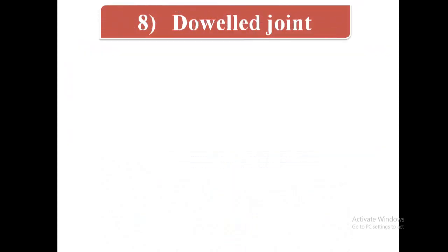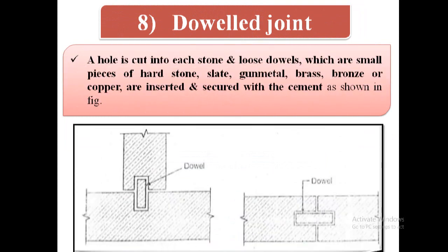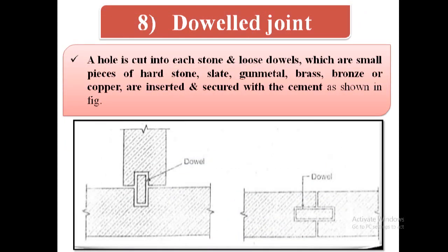Eighth type is dowel joint. A hole is cut into each stone and loose dowels which are small pieces of hard stone, slate, gunmetal, brass, bronze or copper are inserted and secured with the cement as shown in figure.